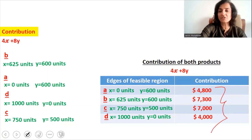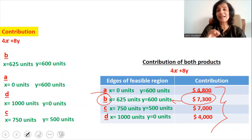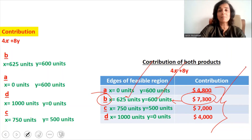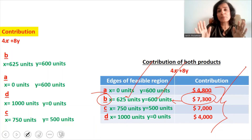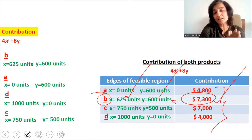Among the four contributions, $7,300 is the highest, and that corresponds to point B. So the optimum production plan — the plan which gives the maximum contribution — is to produce 625 units of X and 600 units of Y. This is the same answer we got under the ISO contribution line method. Whether you use the ISO contribution line method or the simultaneous equation method, you get the very same optimum production plan.